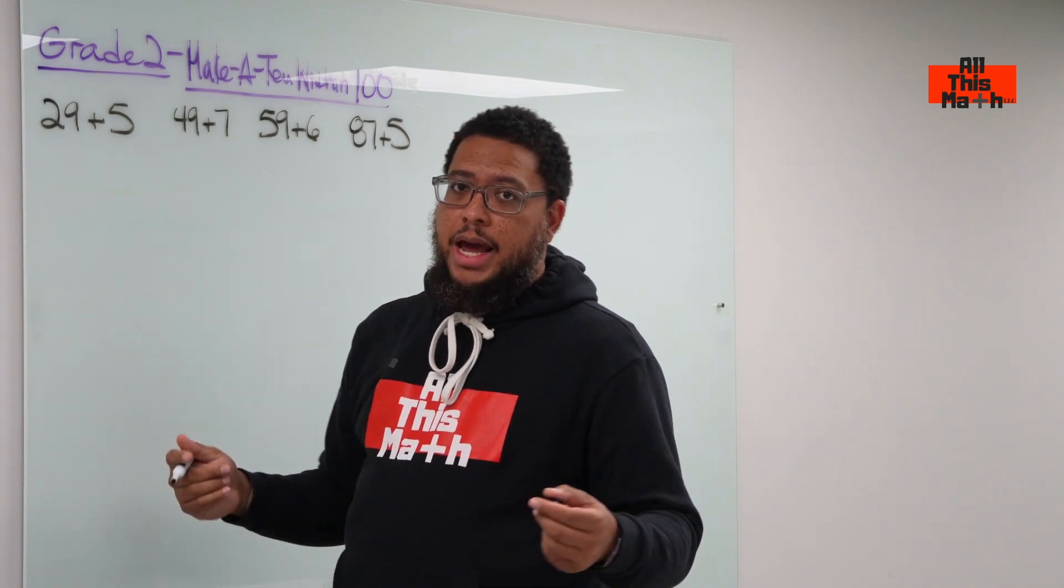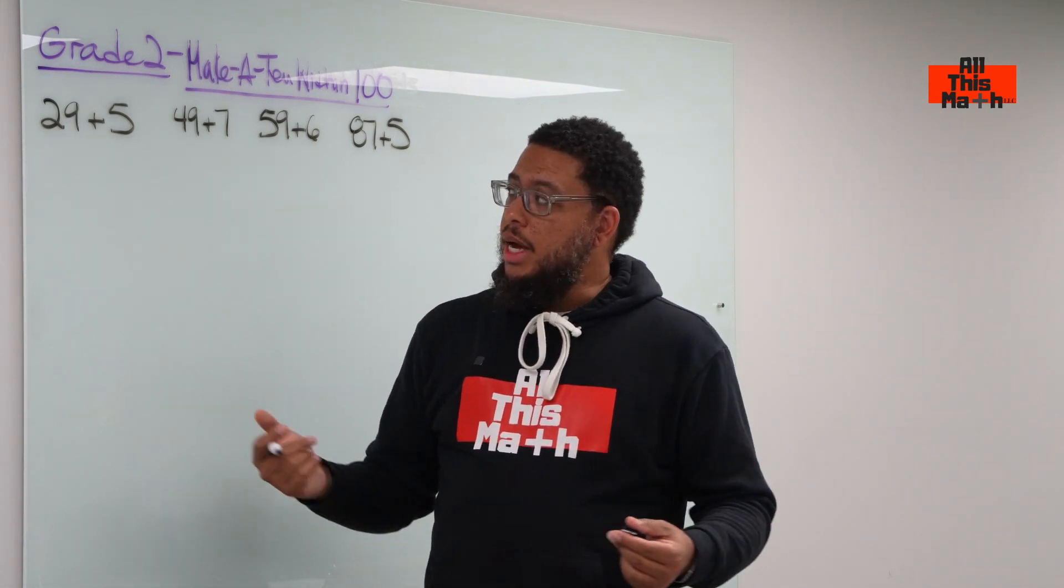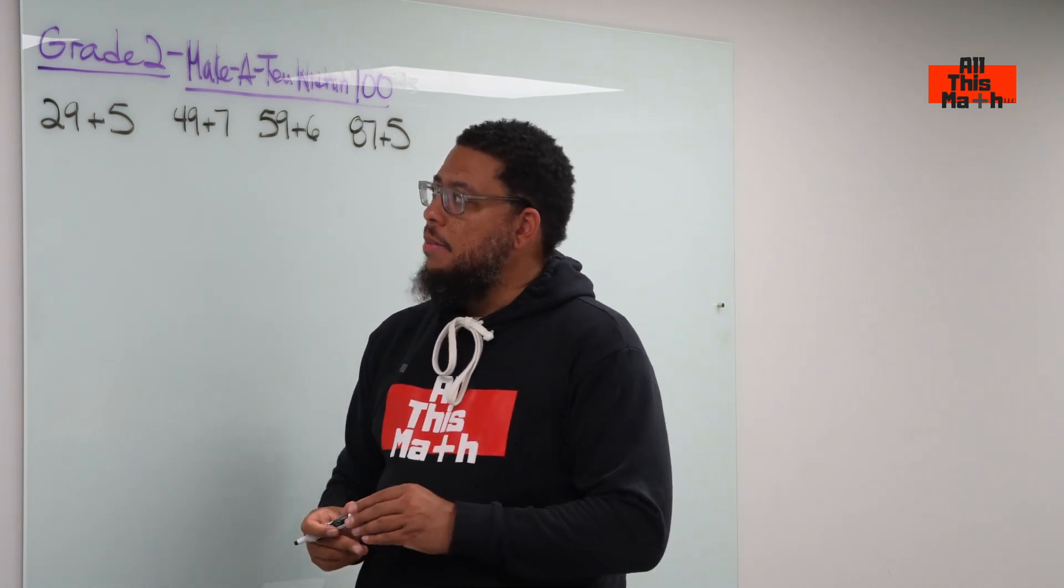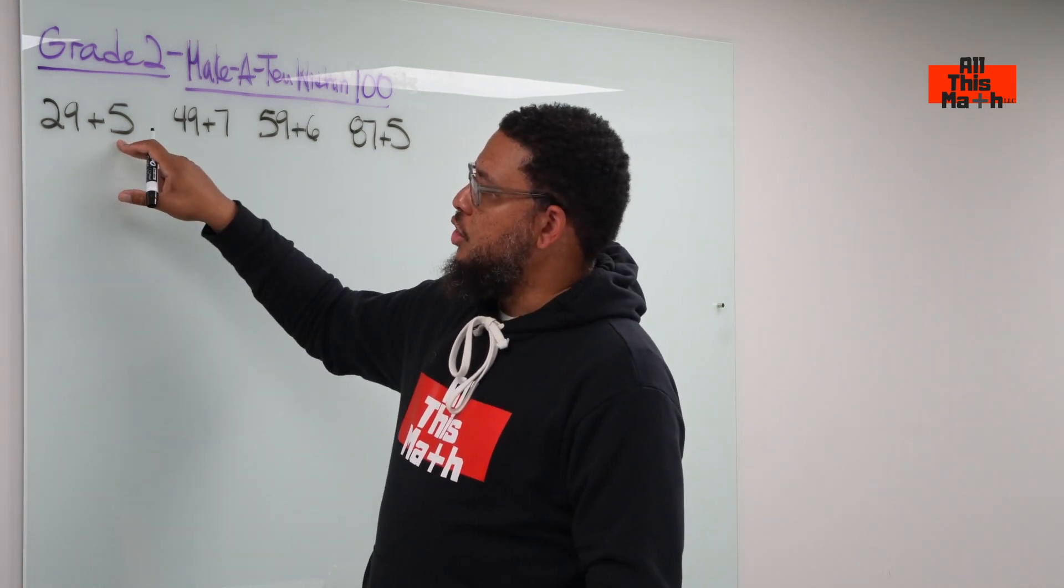But the thing is, we say, okay, what do I need to add to 29 to make it into a 30? I need to add 1 to it. But then the question is, where am I going to get the 1 from? I'm going to get the 1 from the other addend, this 5.